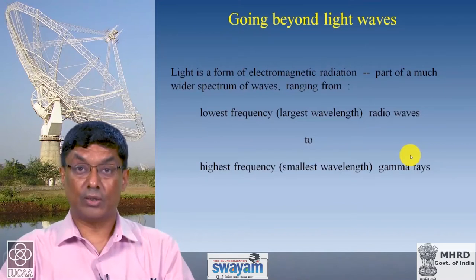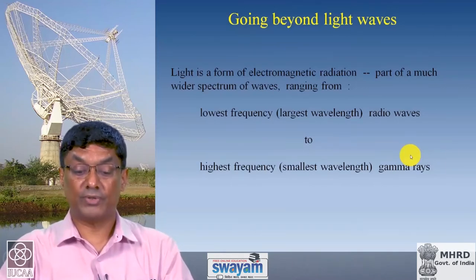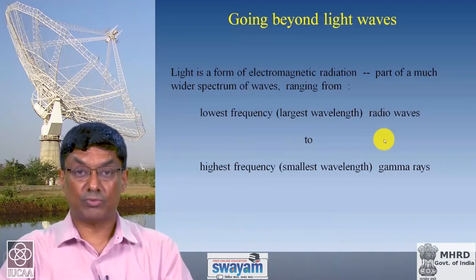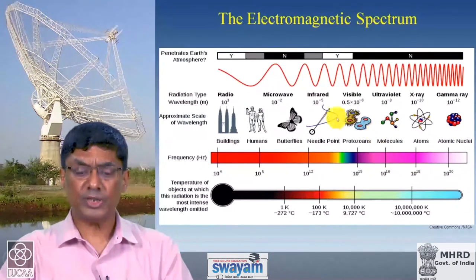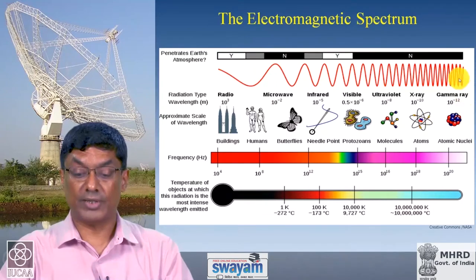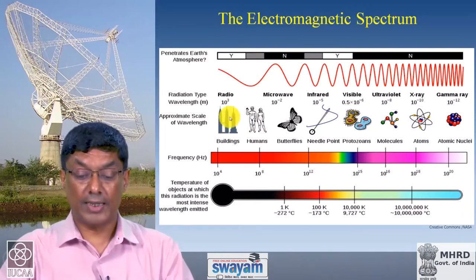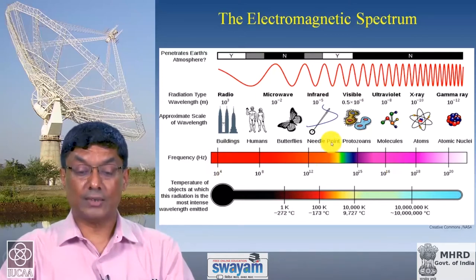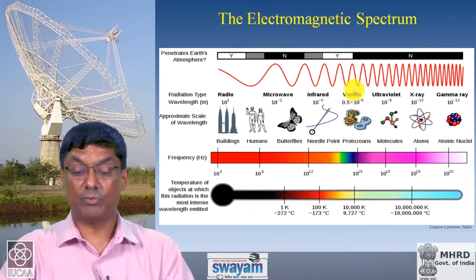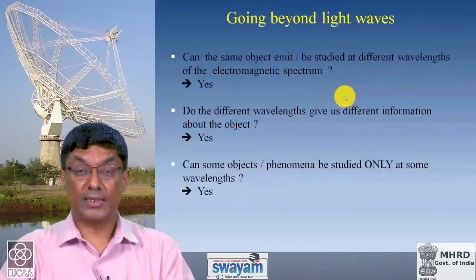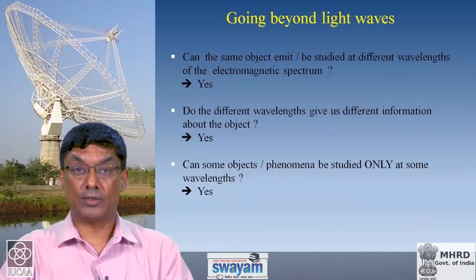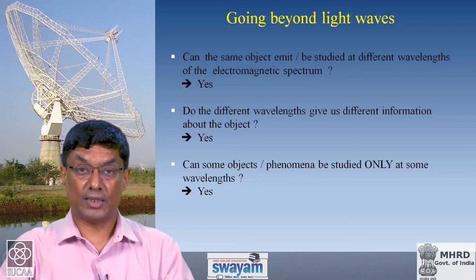Let us go beyond light waves and ask: light is a form of electromagnetic radiation, part of a much wider spectrum ranging from the lowest frequency — the largest wavelengths, which are radio waves — to the highest frequency, smallest wavelength, which are gamma rays. Can the same object in the universe emit at different wavelengths? The answer is yes. Do different wavelengths give us different information about the object? Again yes — and that is very important.